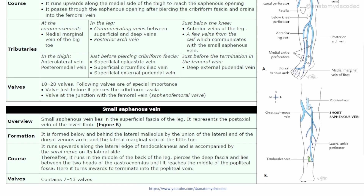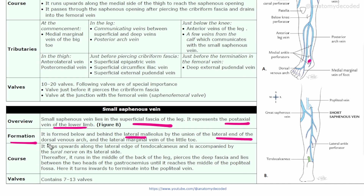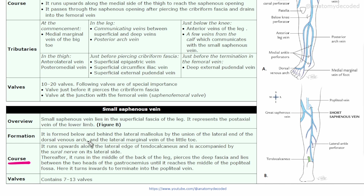The small saphenous vein also lies in the superficial fascia and represents the post-axial vein of the lower limb. It is formed below and behind the lateral malleolus — contrast this with the great saphenous vein which was formed in front of the medial malleolus. It is formed by the union of the lateral end of the dorsal venous arch and the lateral marginal vein of the little toe.